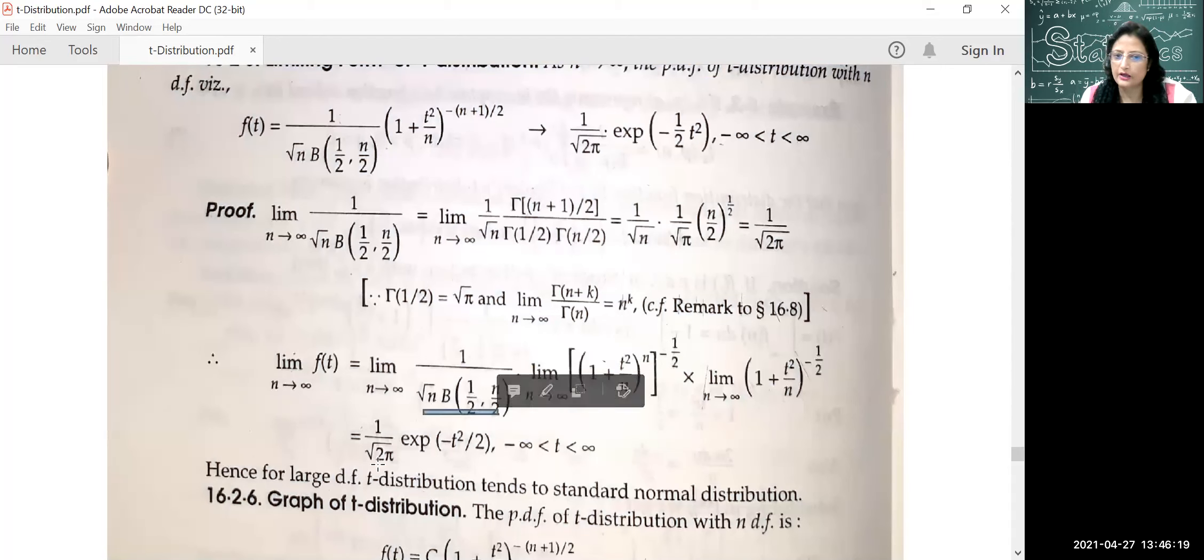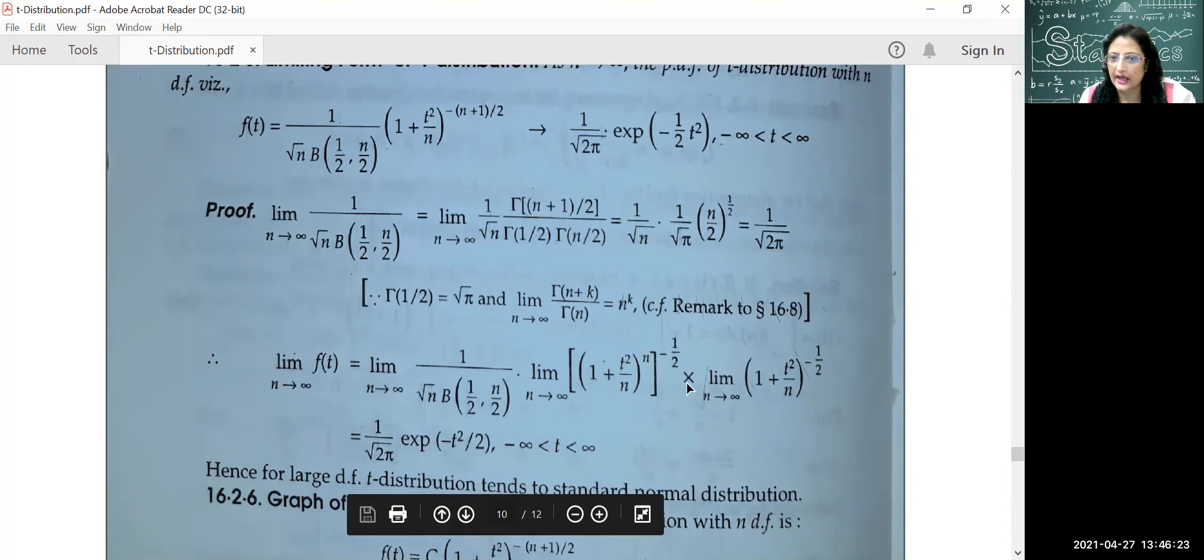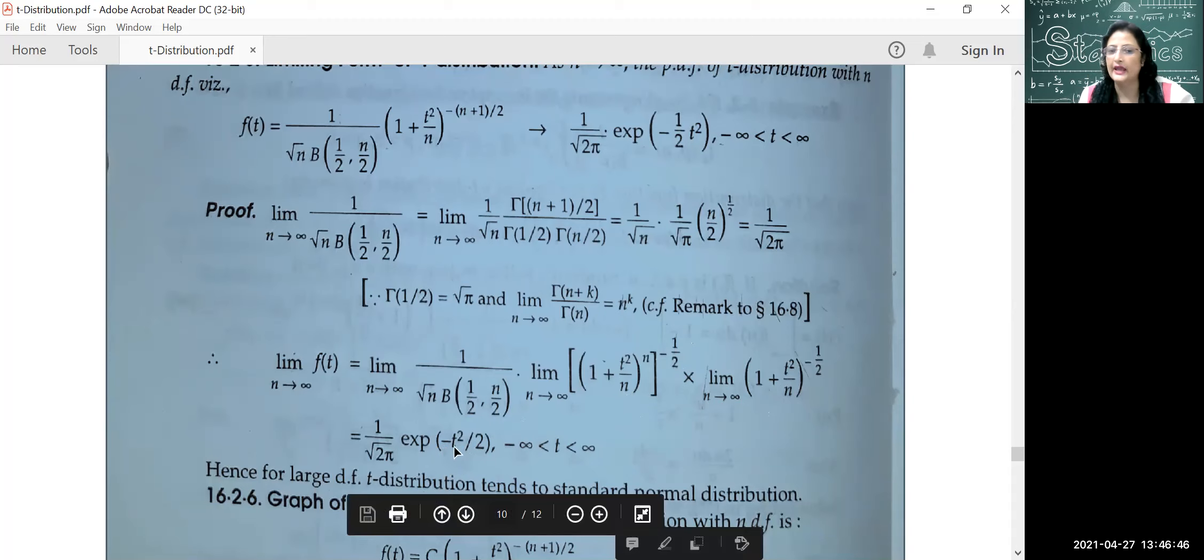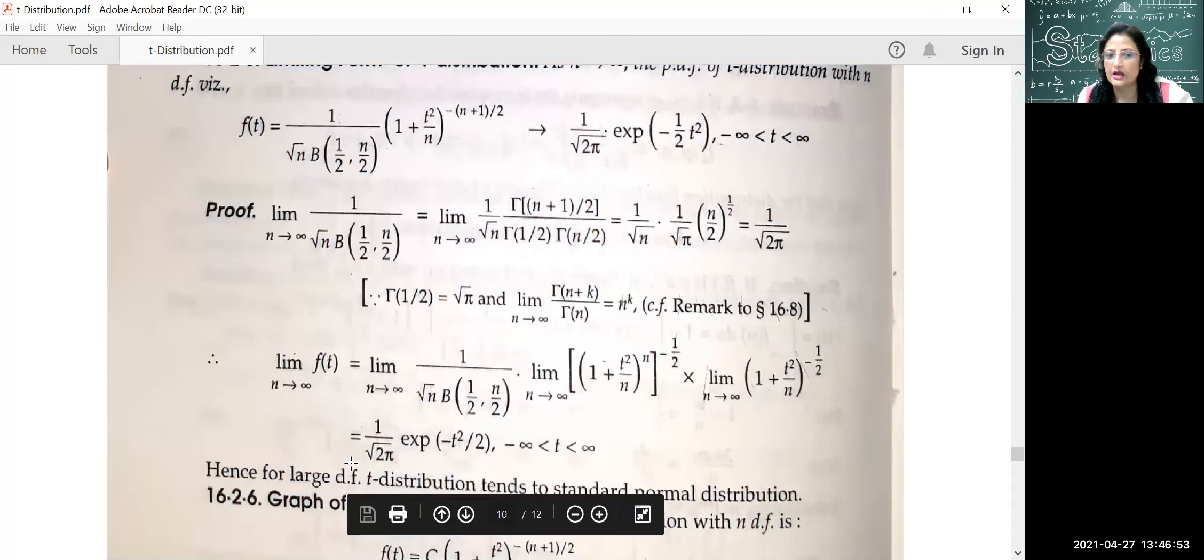This part of the answer is 1 by under root 2 pi. We have already written it. Now what is this? This is a standard form of limit. This is e raised to the power minus t-square by 2. This is the distribution of standard normal variable. So this is the limiting form of t-square.